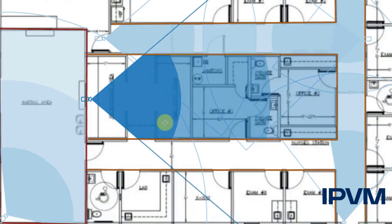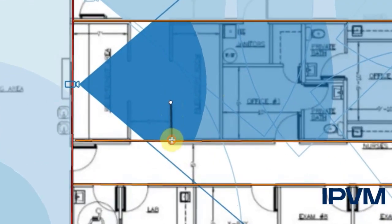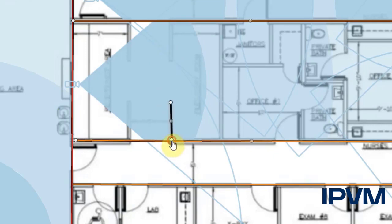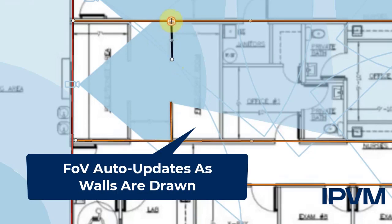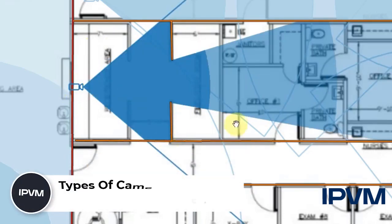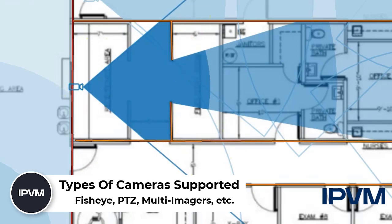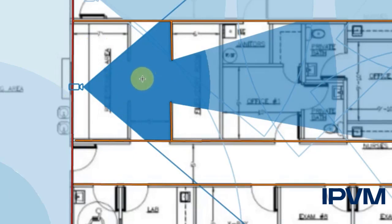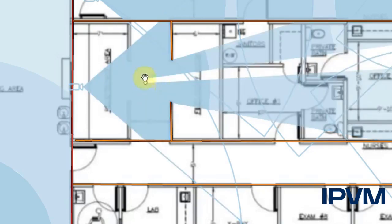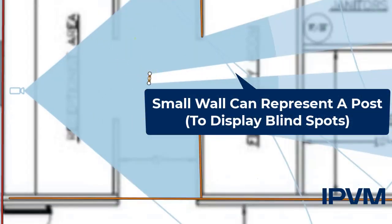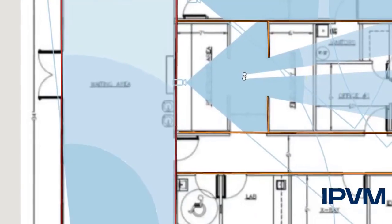And again, if we drew in all of these walls, you could see exactly what that field of view is going to look like. It's very dynamic, automatically updates as we draw the walls in, and works with our fisheyes, PTZs, and multi-imagers. No matter how complex your situation is, it will adjust for that. So let's say there just happened to be a metal post — we can draw a very small wall segment to essentially represent a post, and actually show the blind spot within that area behind it.